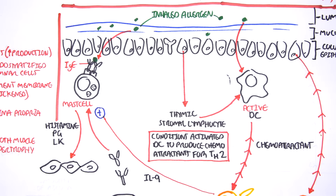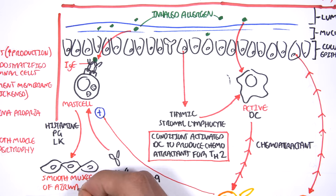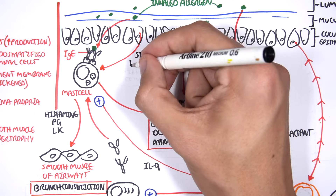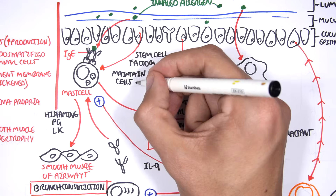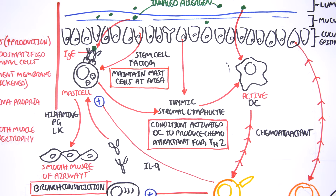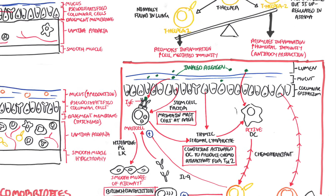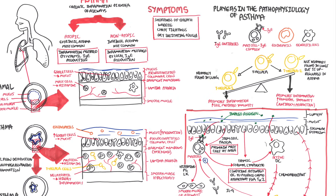Histamine specifically stimulates smooth muscles in the airways to cause constriction, resulting in bronchoconstriction. During this process, endothelial cells release stem cell factors that maintain mast cells in the area. Because IgE represents immunological memory, whenever the same allergen is inhaled again it will trigger the entire process — histamine release, bronchoconstriction, and increased eosinophils — repeatedly. Thank you for watching this video on asthma and its pathophysiology.